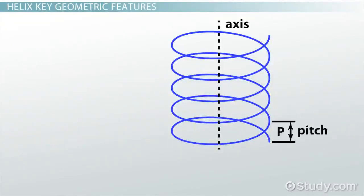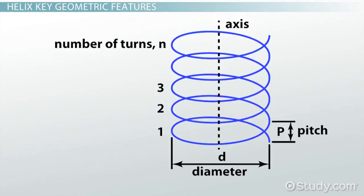Let's first look at the key geometric features that define the overall shape and size of a helix, which you can see in the figure on your screen right now. There are four key geometric parameters associated with a helix.